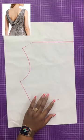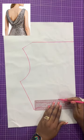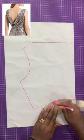Then trace all the way to the first dart leg and complete it by blending it nicely with a curved ruler.